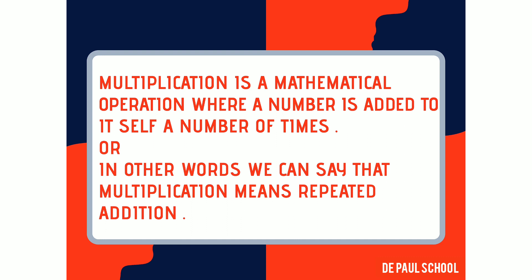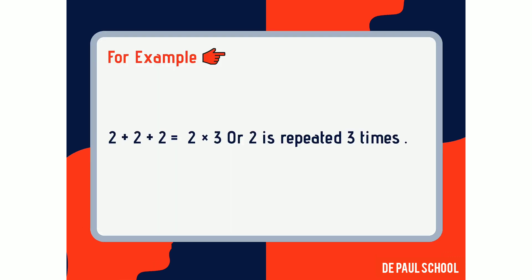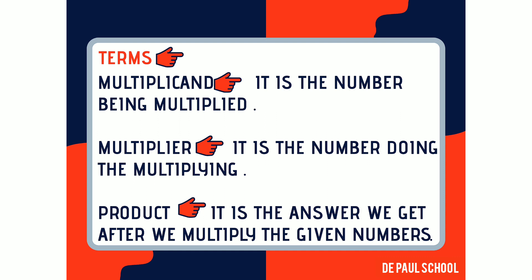In other words, we can say that multiplication means repeated addition. For example, 2 plus 2 plus 2 is equal to 2 into 3, or 2 is repeated 3 times. Now let us learn a few terms that are related to multiplication. They are multiplicand, multiplier, and product.